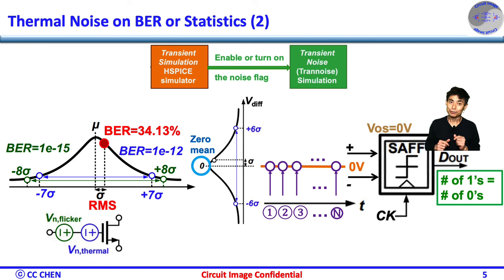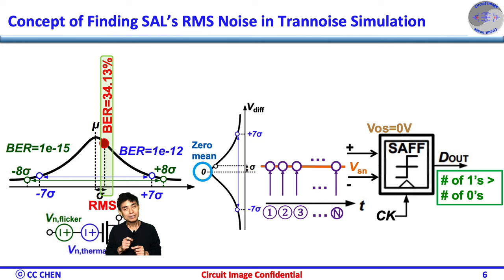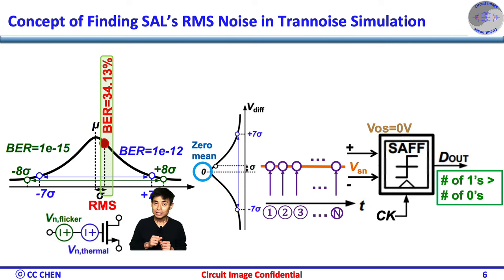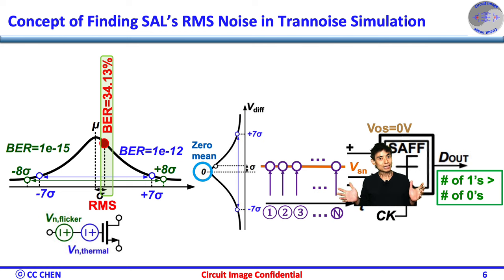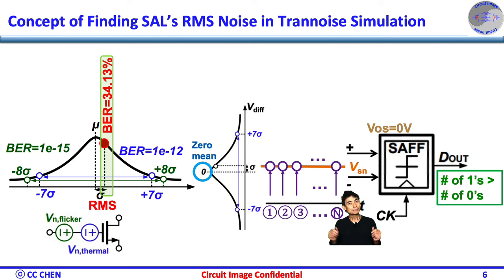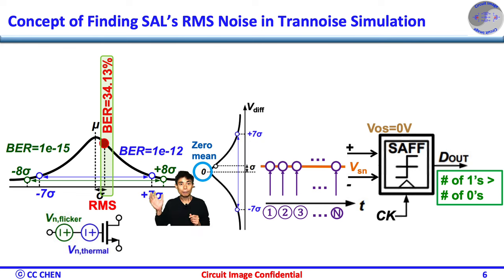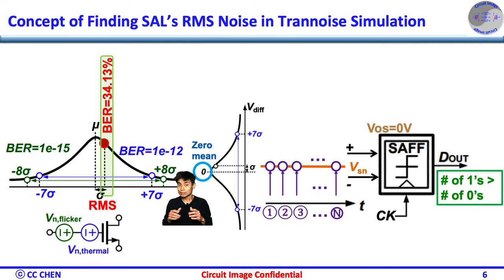After knowing the sampler's BER or the probability under the Gaussian noise, how do we define the RMS value of its input-referred noise? The concept of finding the sampler's RMS or one-sigma noise is to add a differential input voltage VSN such that we can skew the comparator decision and match the BER equals 34.13%, which fits the one-sigma value. Please be advised that many samples are necessary to get the accurate Gaussian distribution and the corresponding probability. After receiving the 1-sigma value, we usually apply extrapolation to estimate the outlier noise up to 7-sigma per side for the peak noise, while still keeping the simulation time to a reasonable number of samples.